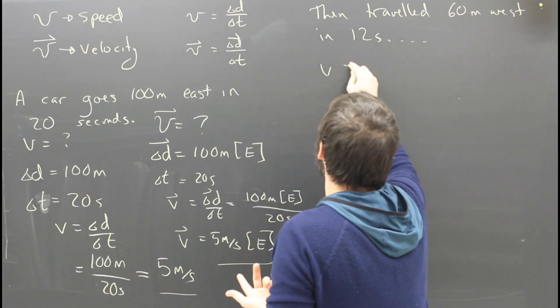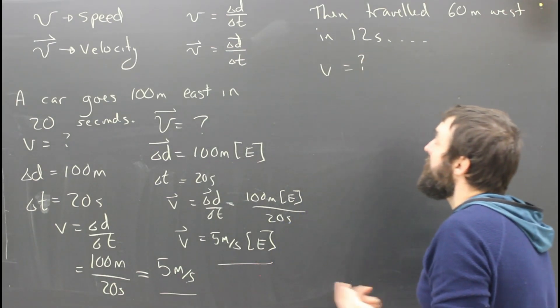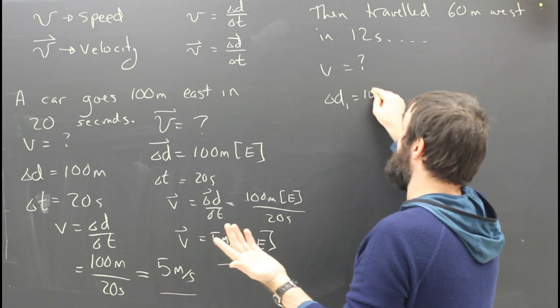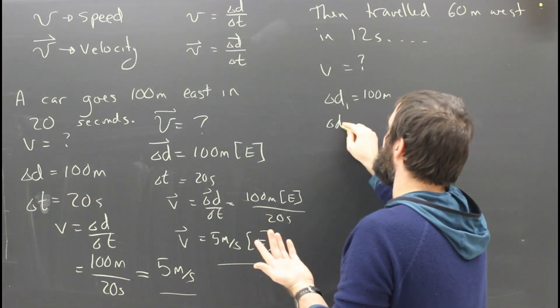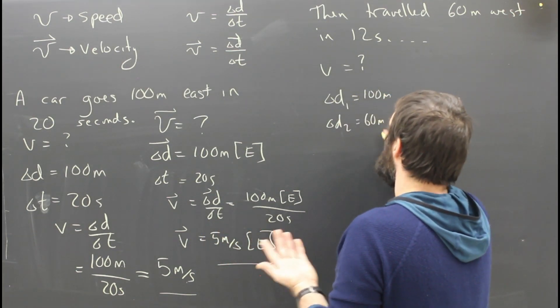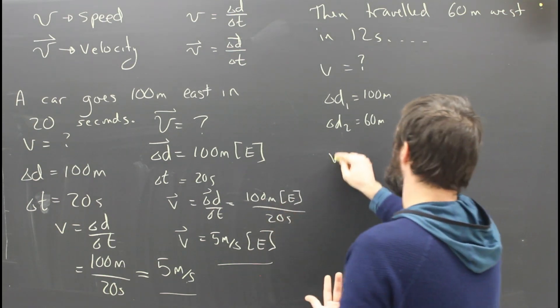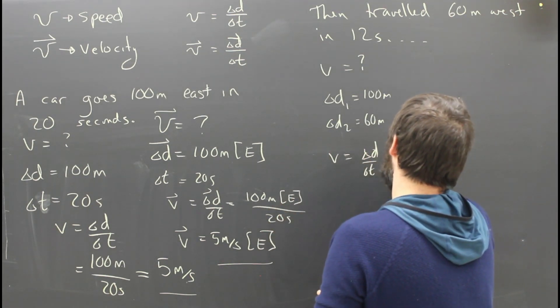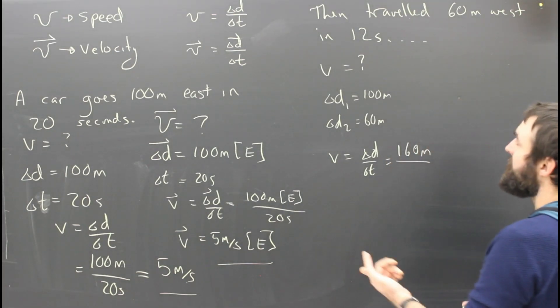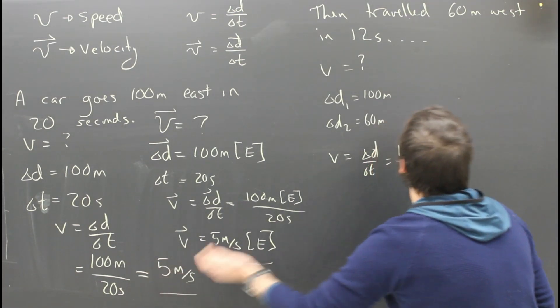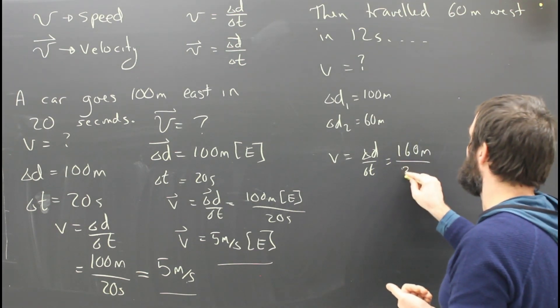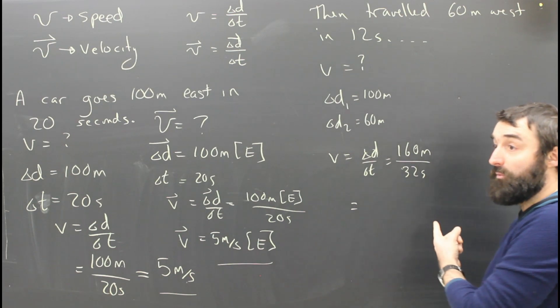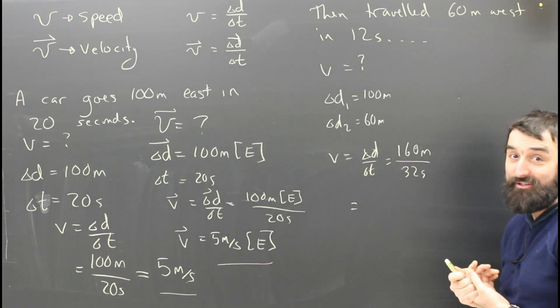Well, now it's gone a distance, a distance 1 of 100 meters, and a distance 2 of 60 meters. So now, its speed is the total distance. The speed is distance over time. That's going to be 160 meters. How long did it take to do that? It took 20 seconds plus 12 seconds, 32 seconds.